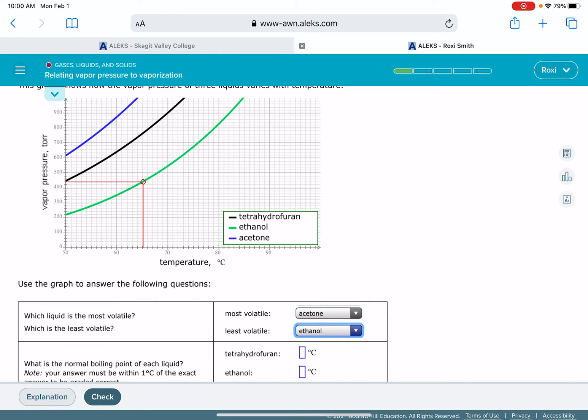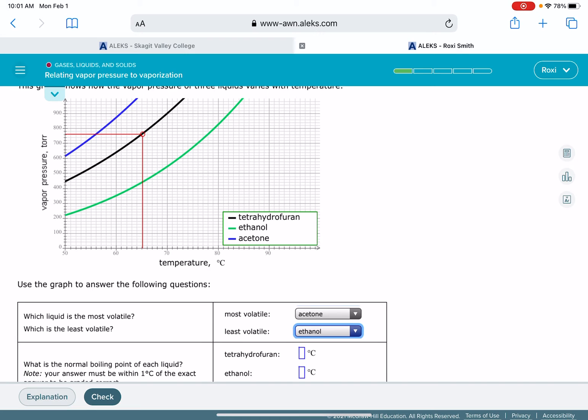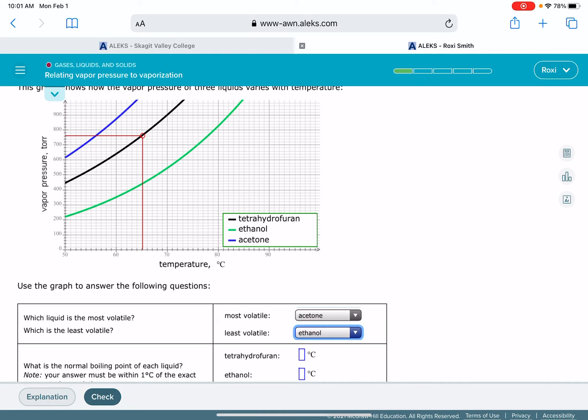For tetrahydrofuran, which is the black line, I'm going to move across. These red lines are here to make it easier for us to read the graph. I'm going to find the temperature that matches up with 760 torr. It looks like it's 61, 62, 63, 65 degrees C for tetrahydrofuran.